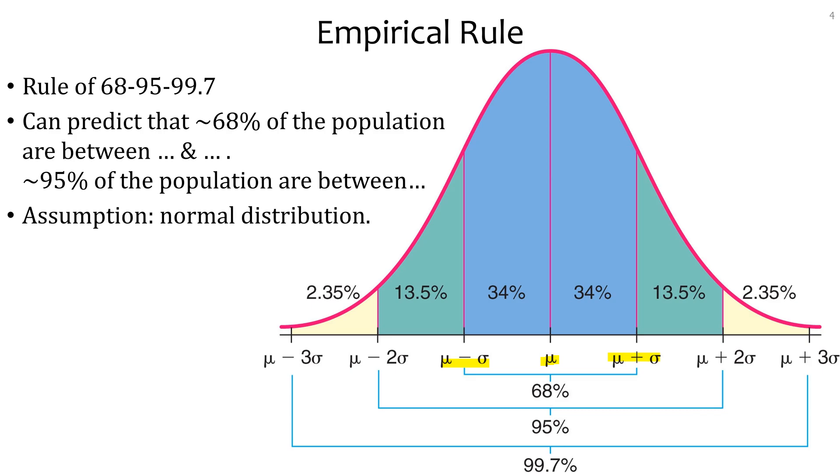One thing that's going to be important here is the assumption that you must have a normal distribution. Usually with large sample sizes, we can assume that based on the central limit theory, but you need to specify that. Whenever you use this rule, you have to specify your assumption.